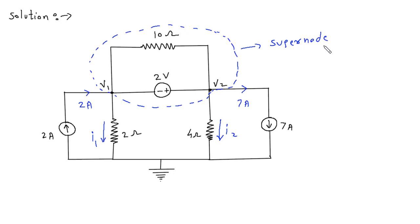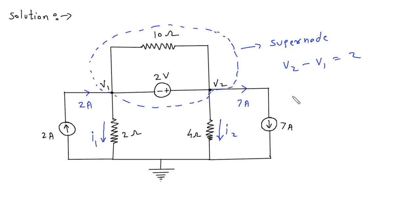From the supernode we can say that v2 minus v1 is equal to 2, because this node is at higher potential and this is at lower potential. So v2 minus v1 is equal to 2V.